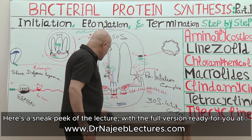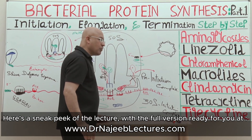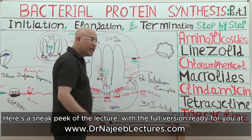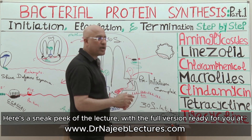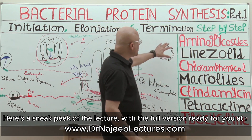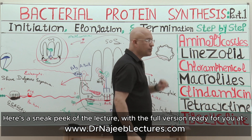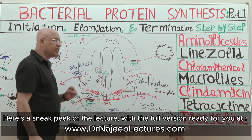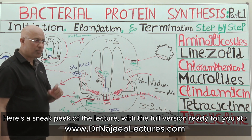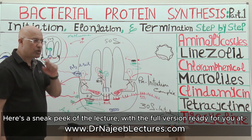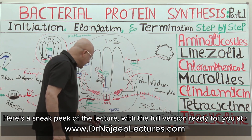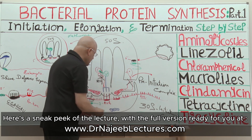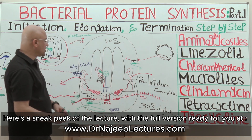Here I want to tell you some clinical points. Number one: aminoglycosides. Aminoglycosides work on the 30S subunit. Aminoglycosides specially interfere with the initiation process.